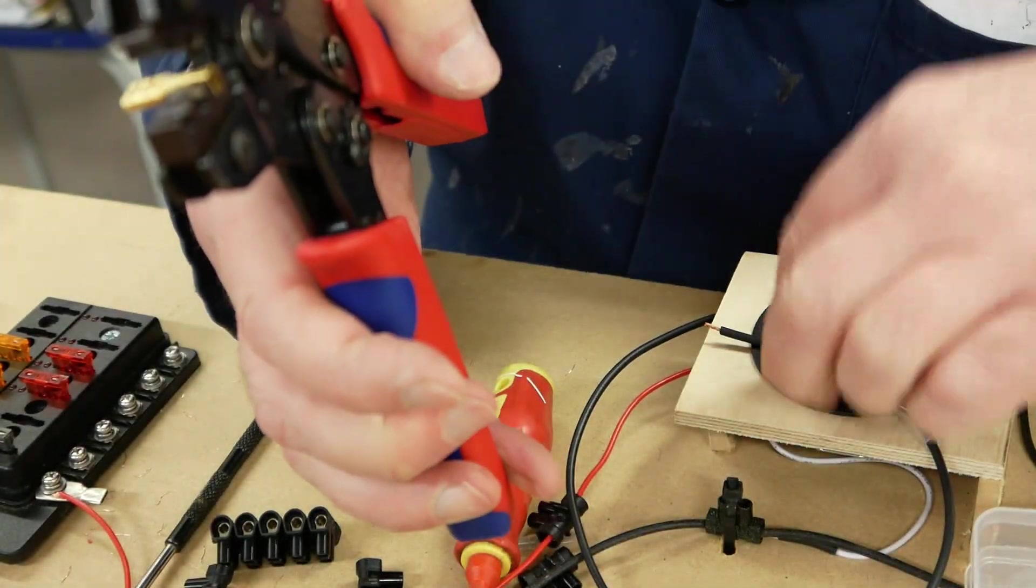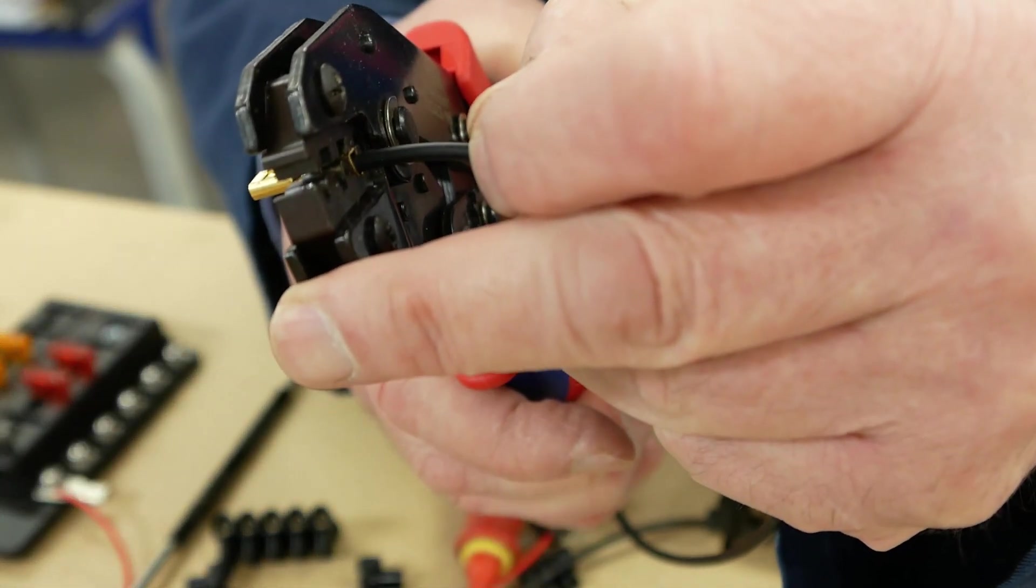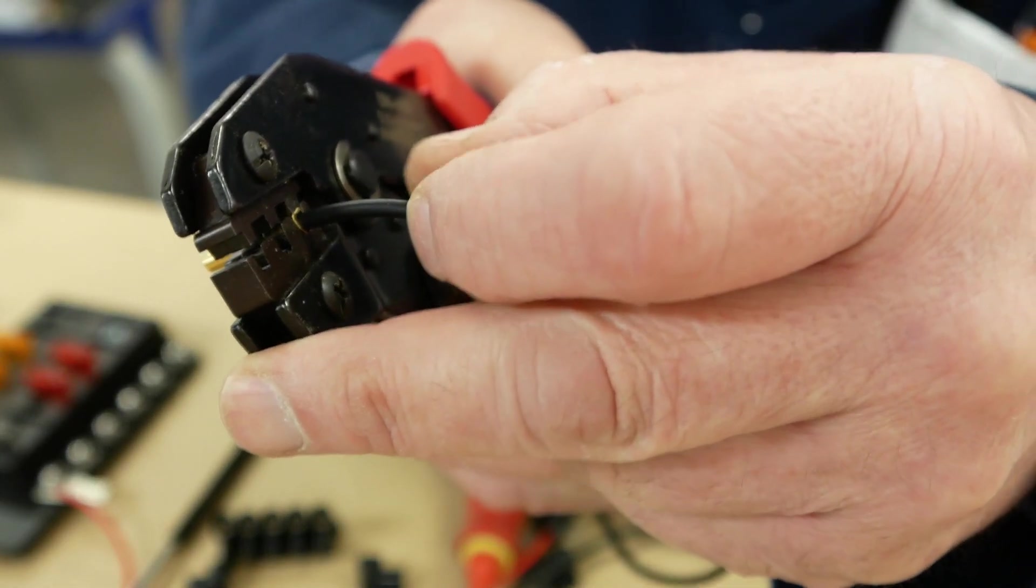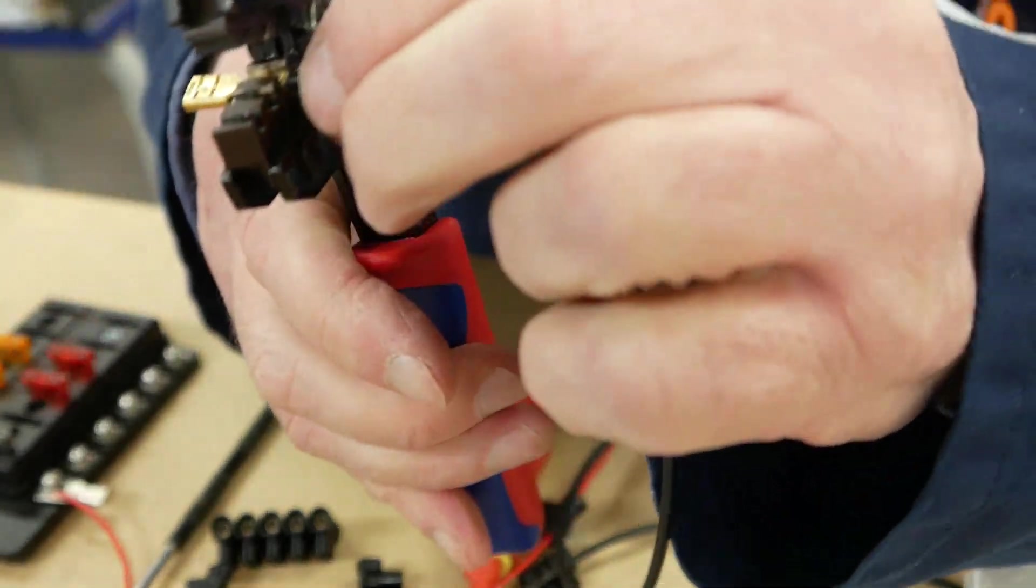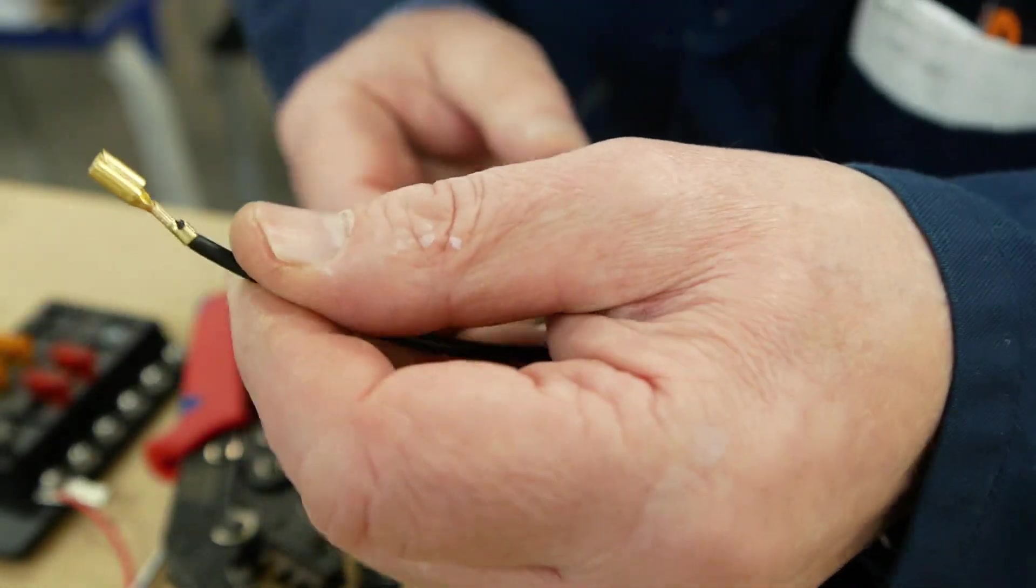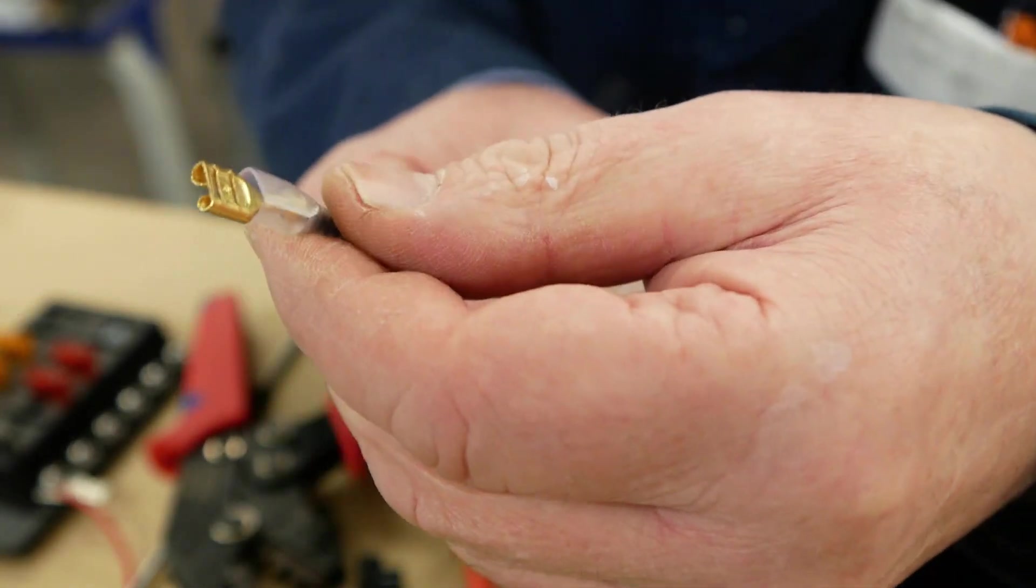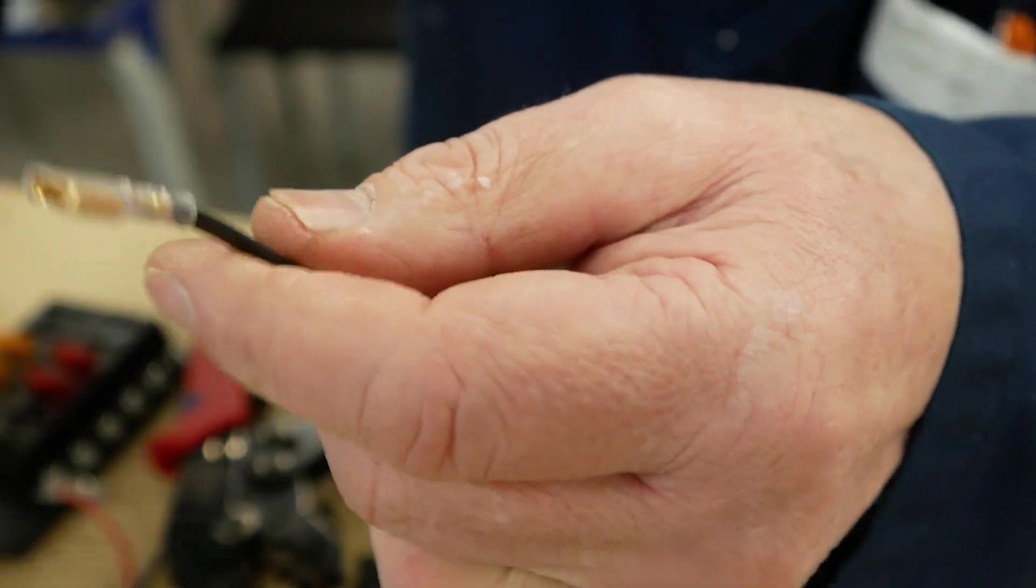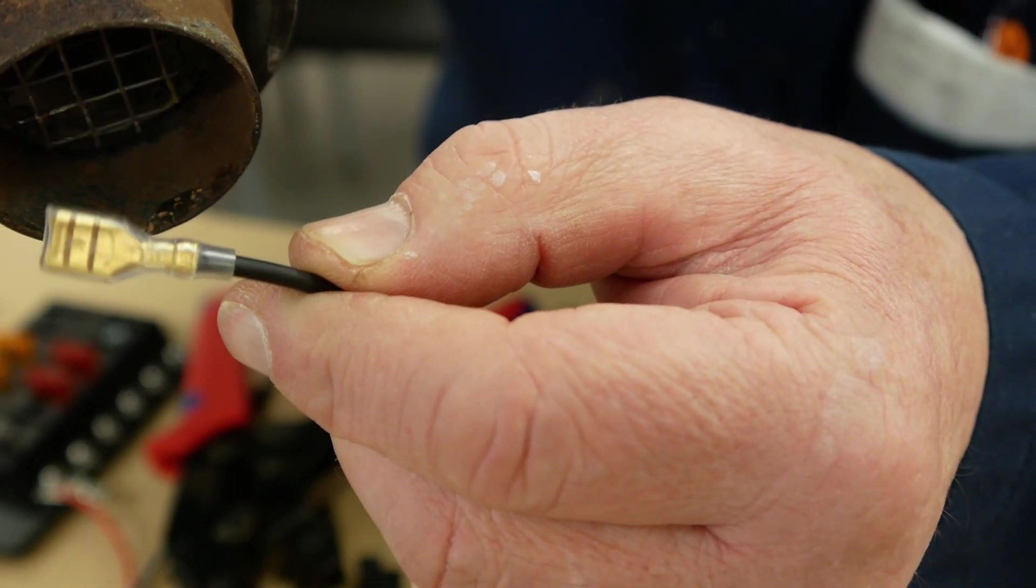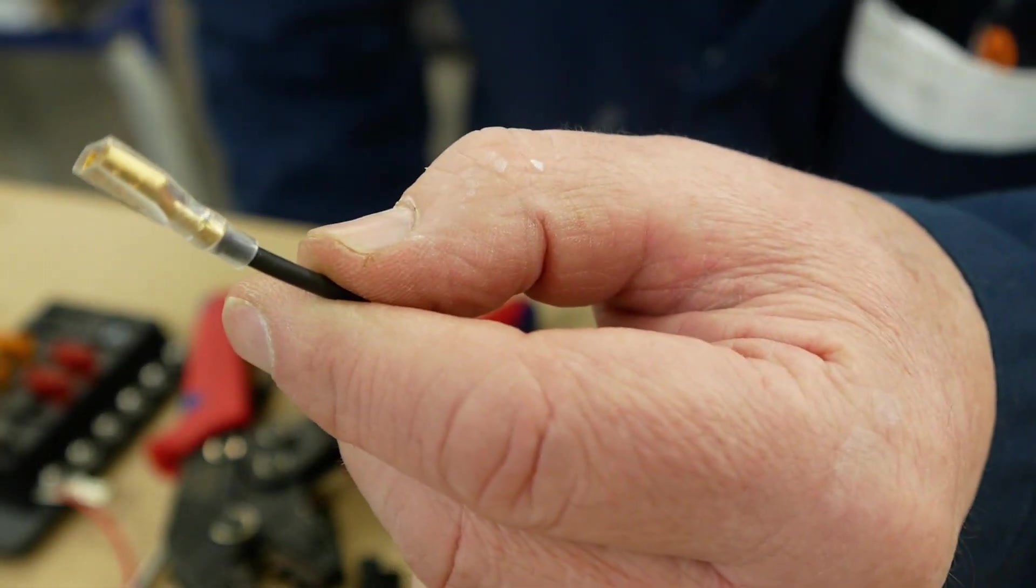Then I can push the cable into there and you can see that I'm crimping the cable at the back as well, and then just pull down and you'll end up with a really professional looking crimp. Now all you have to do is bring your sleeve over and you have a really nice professional finish to your fitting.